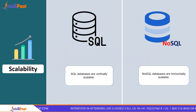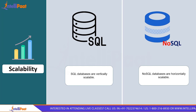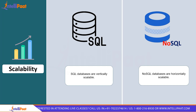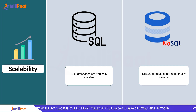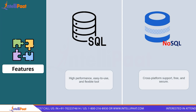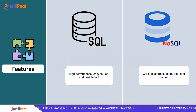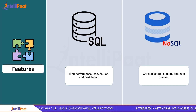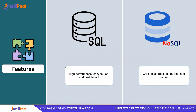Horizontal scaling distributes workload across a large pool of resources, whereas vertical scaling increases the power and efficiency of a server, allowing it to handle more demanding applications. The features of SQL include high performance, ease of use, and a flexible toolset. NoSQL, on the other hand, provides cross-platform support, and is free and secure.